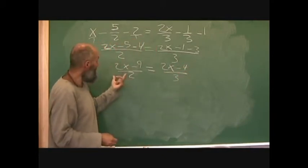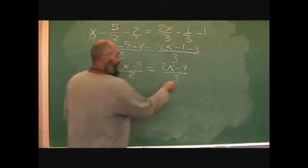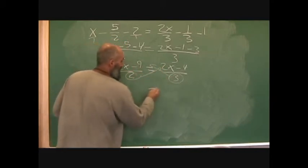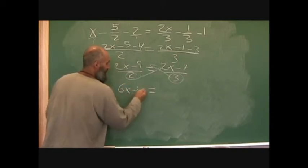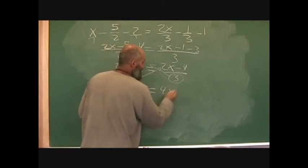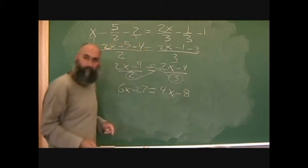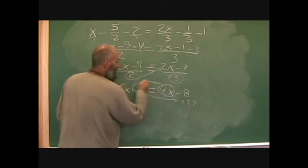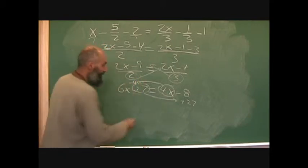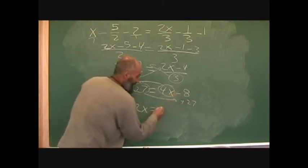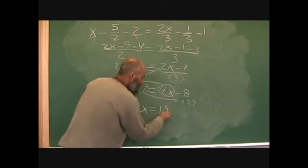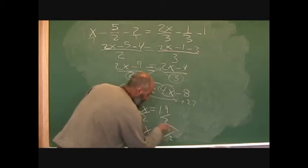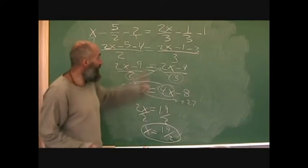Now we have one fraction equal to another fraction, so we cross multiply. Three comes up and multiplies both terms on the left, giving six x minus twenty-seven. Two multiplies the right side, giving four x minus eight. Bring the twenty-seven over and the four x over: six x minus four x is two x, and twenty-seven minus eight is nineteen. Divide by two, and x equals nineteen over two.